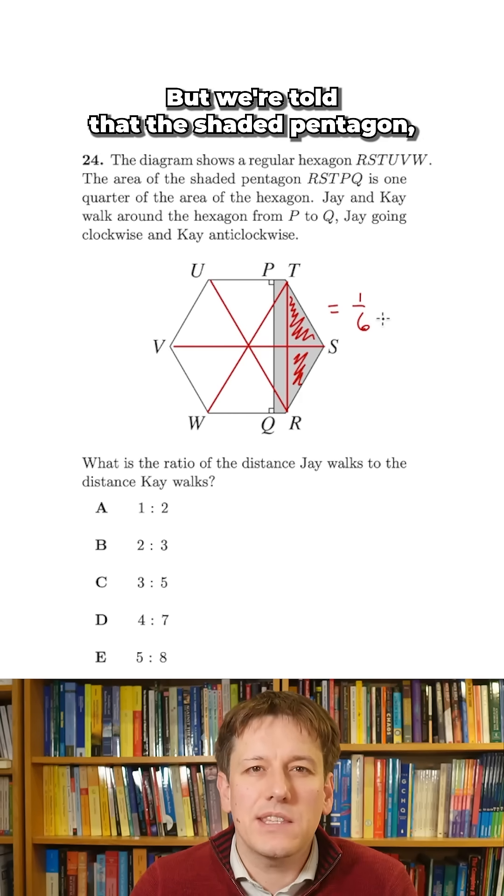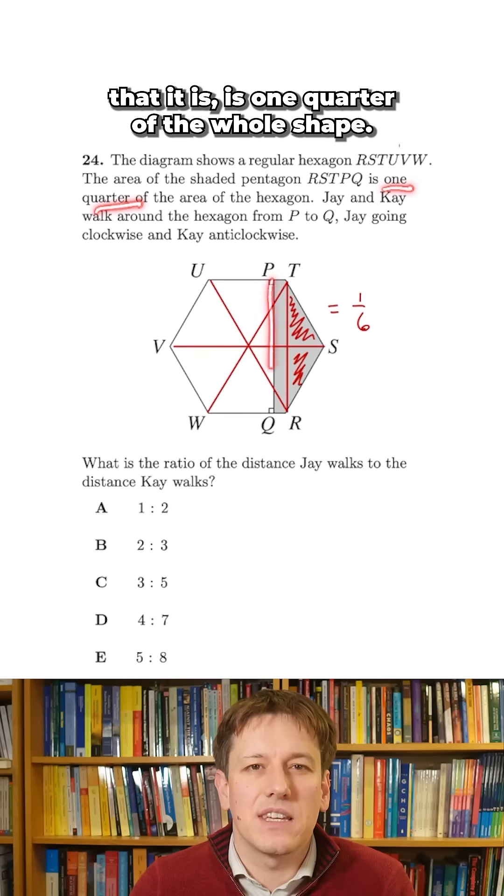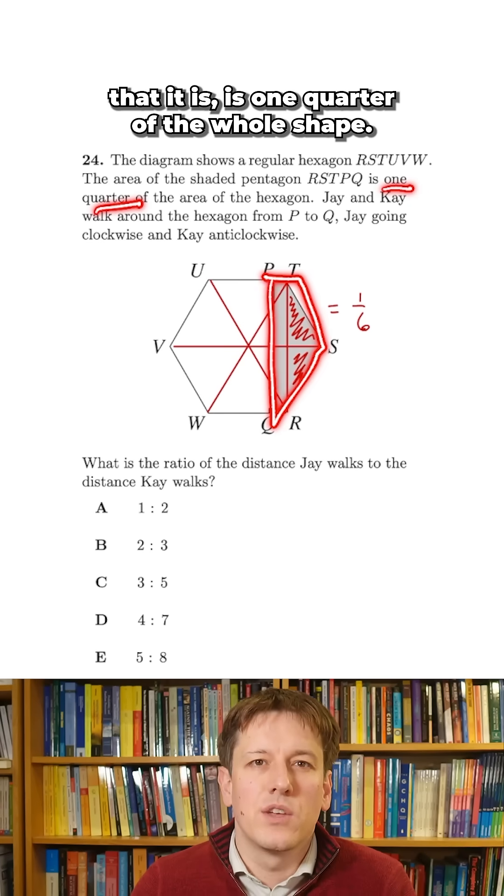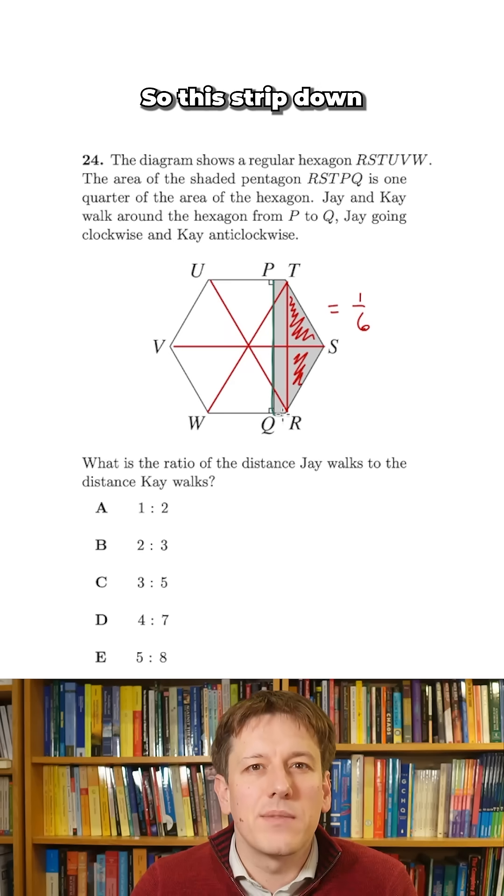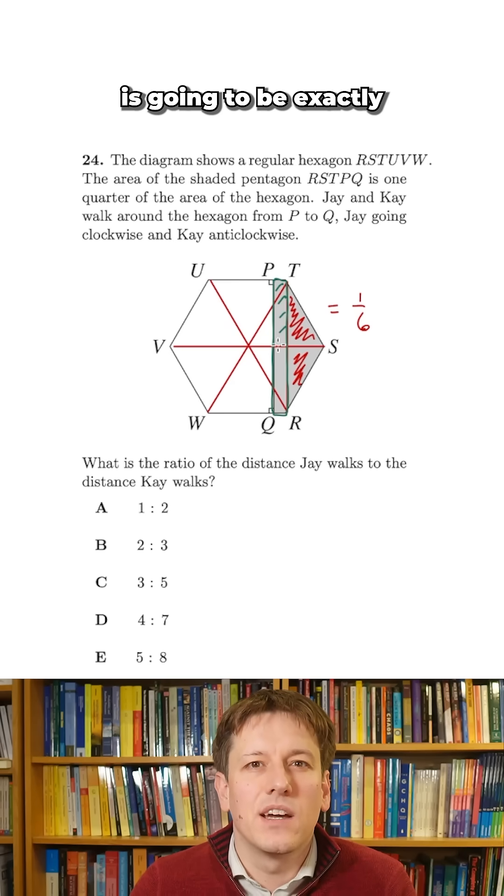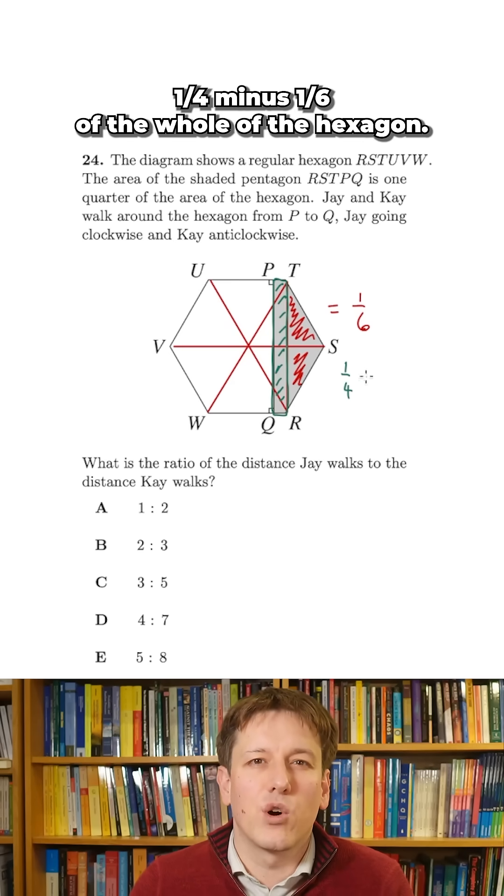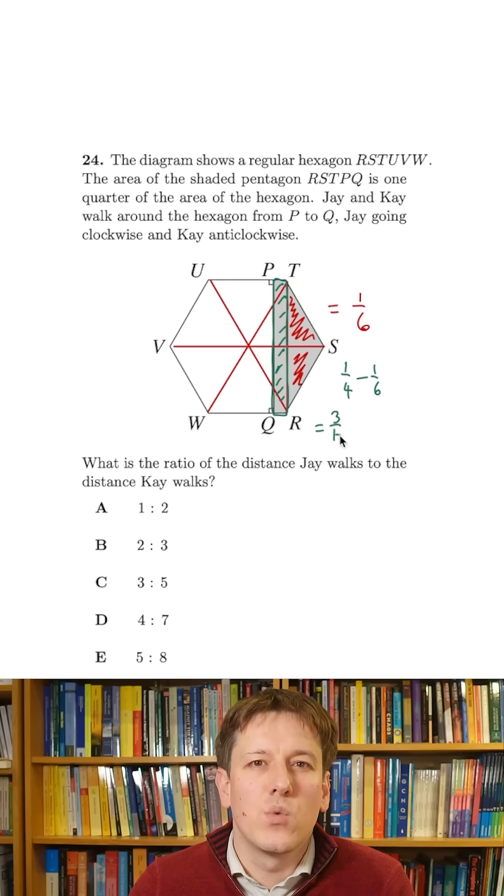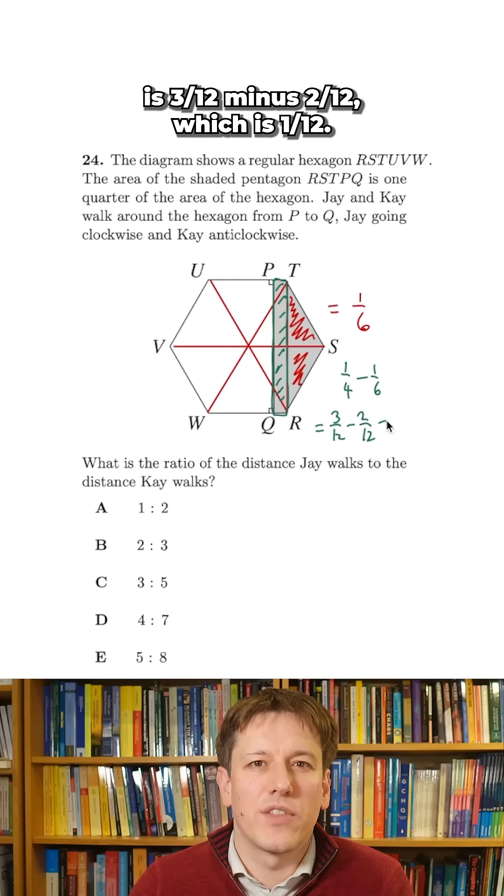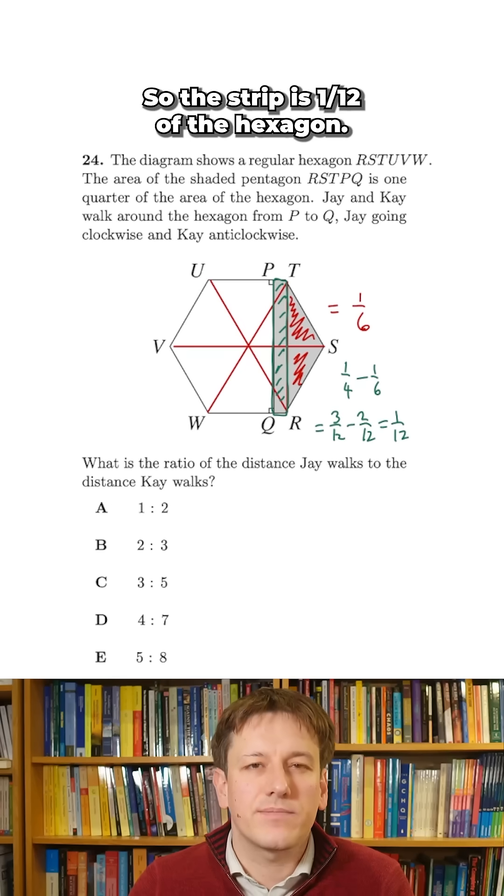But we're told that the shaded pentagon, the whole shaded area that is, is one quarter of the whole shape. So this strip down the middle here is going to be exactly one quarter minus one sixth of the whole of the hexagon. One quarter minus one sixth is three twelfths minus two twelfths, which is one twelfth. So the strip is one twelfth of the hexagon.